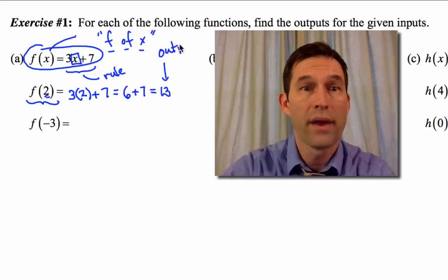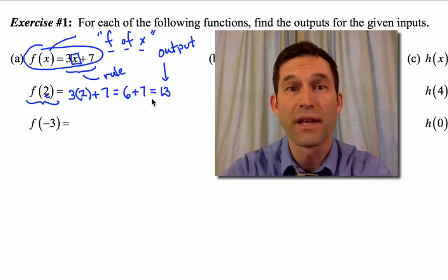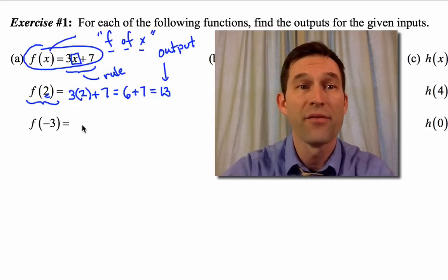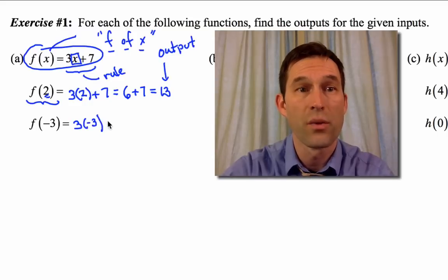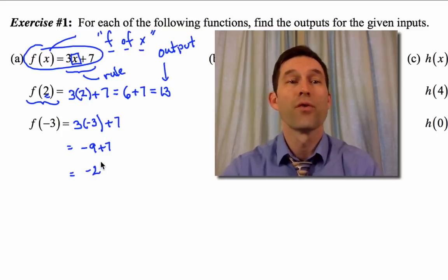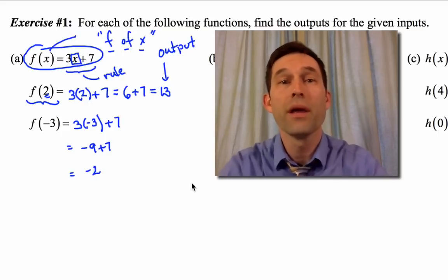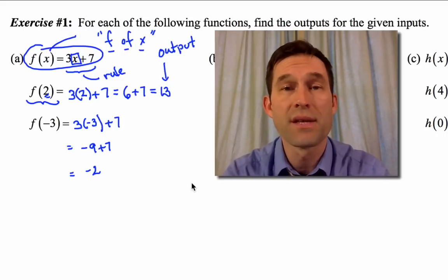f of negative 3 — wherever x is, I replace it with negative 3. So I get 3 times negative 3, which is negative 9. Negative 9 plus 7 is negative 2. So for an input of negative 3, I have an output of negative 2. It's pretty much that simple.